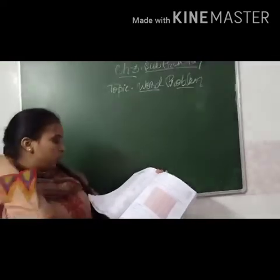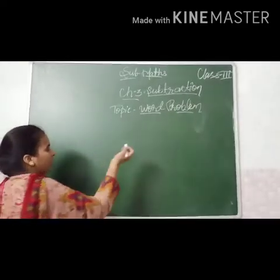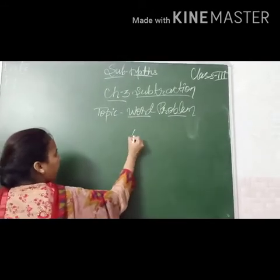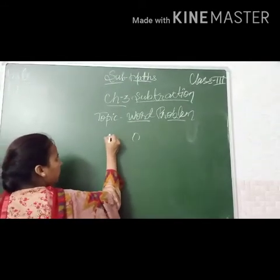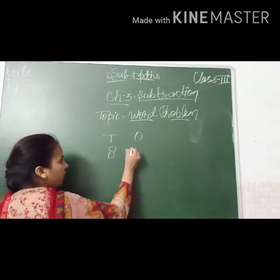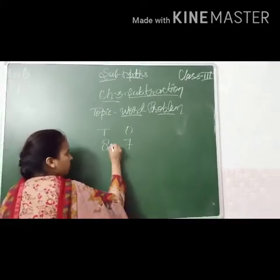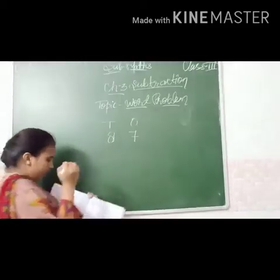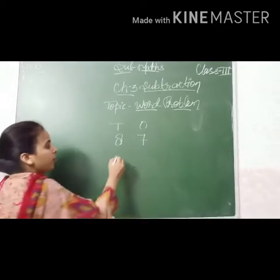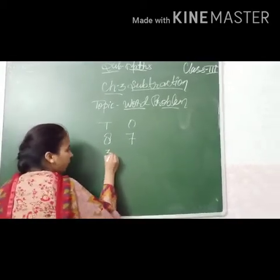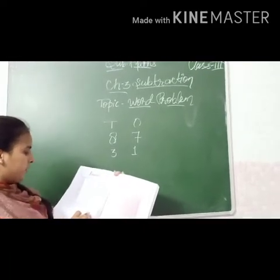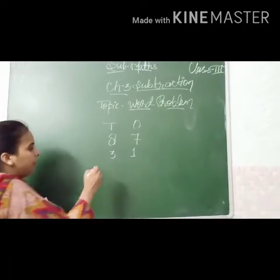So firstly, what should we do? We will write in place value — ones and tens. Rohit got Rs. 87, and he spent Rs. 31 on the coloring pen set. So we write 87 minus 31.